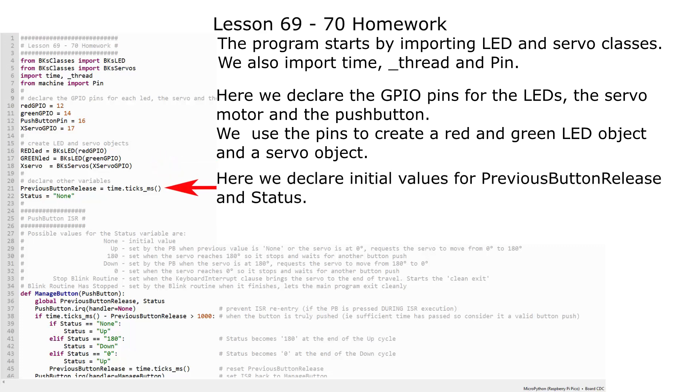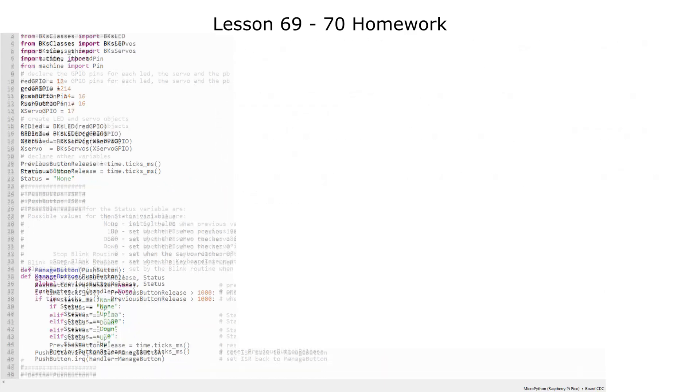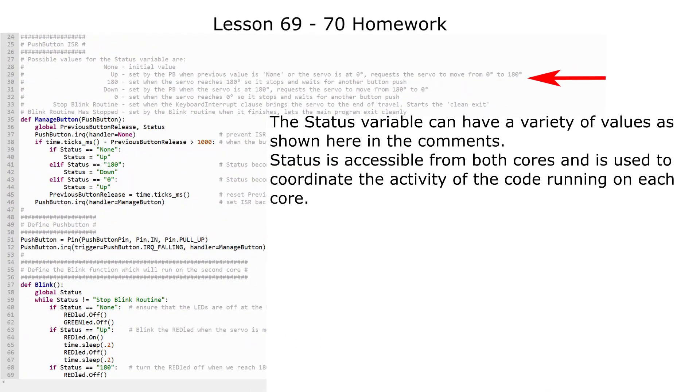We use the pins to create a red and green LED object and a servo object. And here, we declare initial values for previous button release and status variables. The status variable can have a variety of values, as shown here in the comments. Status is accessible from both cores and is used to coordinate the activity of the code running on each core.